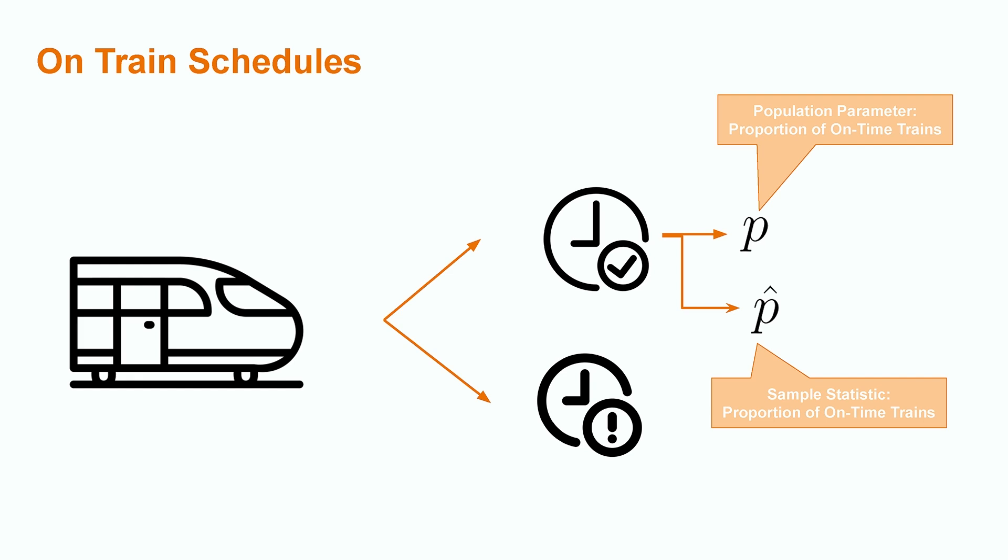Let's take a look into how we construct such a confidence interval for a single population proportion by first discussing the general structure of a confidence interval.